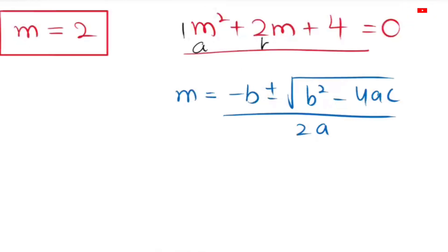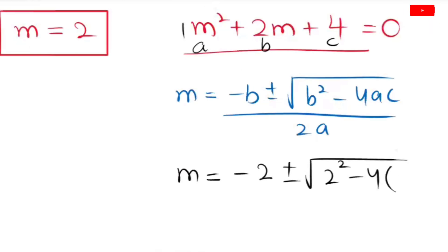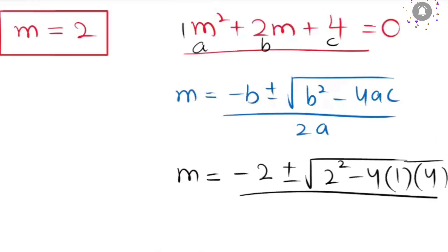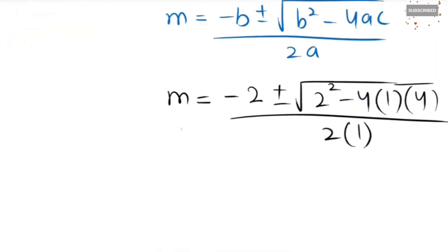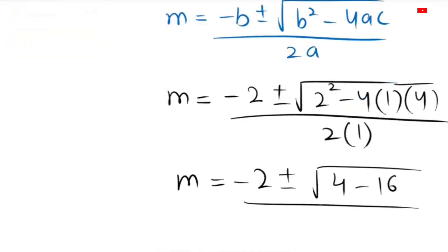Here a equals 1, b equals 2, and c equals 4. Substituting: m equals negative 2 plus or minus the square root of 2 squared minus 4 times 1 times 4, all over 2 times 1. This simplifies to m equals negative 2 plus or minus the square root of 4 minus 16, over 2.